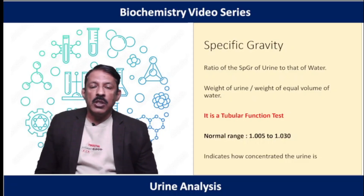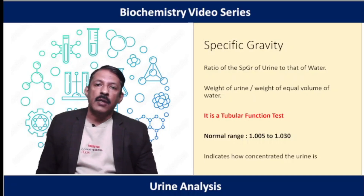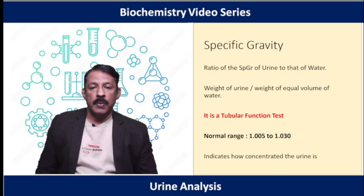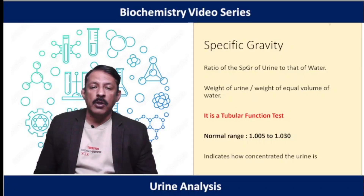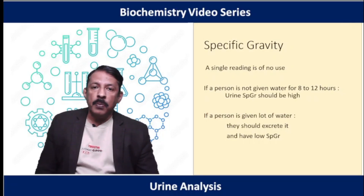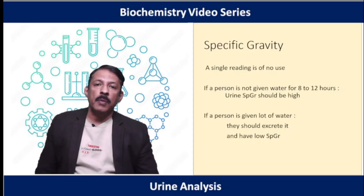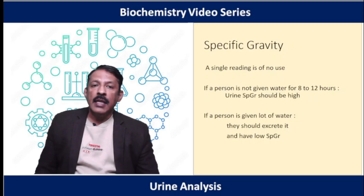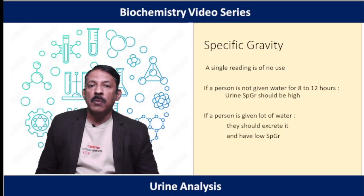Specific gravity is the first physical test we actually perform. It is the ratio of the specific gravity of urine to that of water, taken as one — simply, the weight of urine divided by the weight of an equal volume of water. Specific gravity is a tubular function test. The normal range is 1.005 to 1.030, indicating whether urine is concentrated or diluted. A single reading tells us little; context matters. If we withhold water for 8 to 12 hours, the next morning's urine should be very concentrated. If it is not, we know the kidney has a problem concentrating urine.